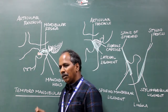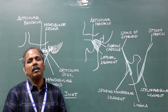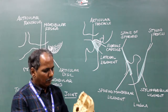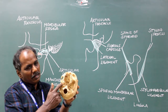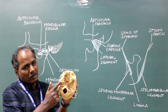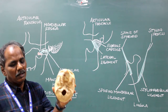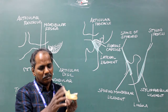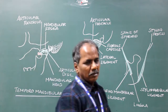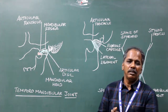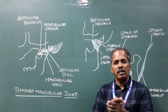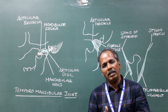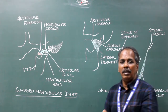Temporomandibular joint. Type: synovial, variety: condylar variety. Articular ends: proximally, the articular fossa and the articular eminence of the temporal bone; distally, the head of the mandible. The articular ends are usually lined by hyaline articular cartilage in synovial joints, but the articular ends of the temporomandibular joint are lined by fibrocartilage. Hence, it is an atypical synovial joint.